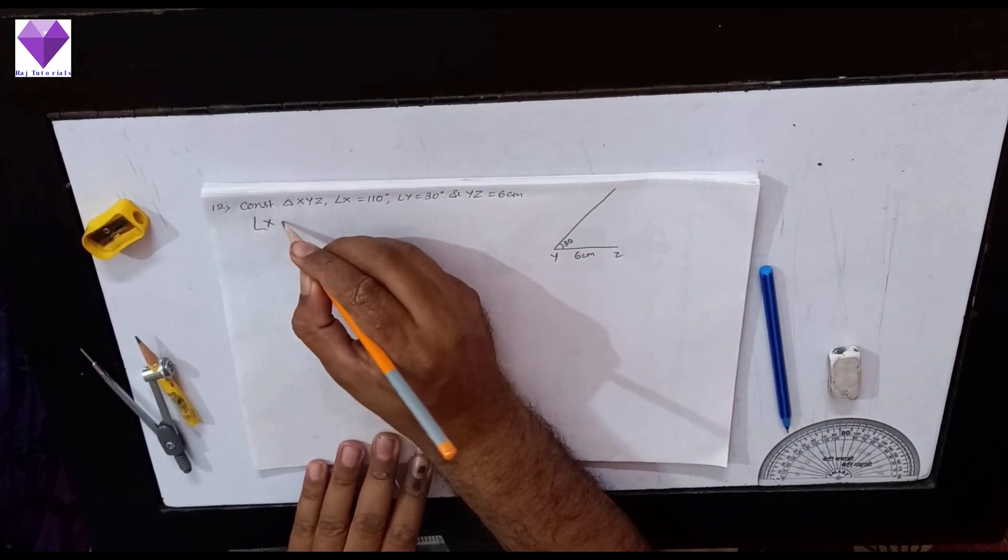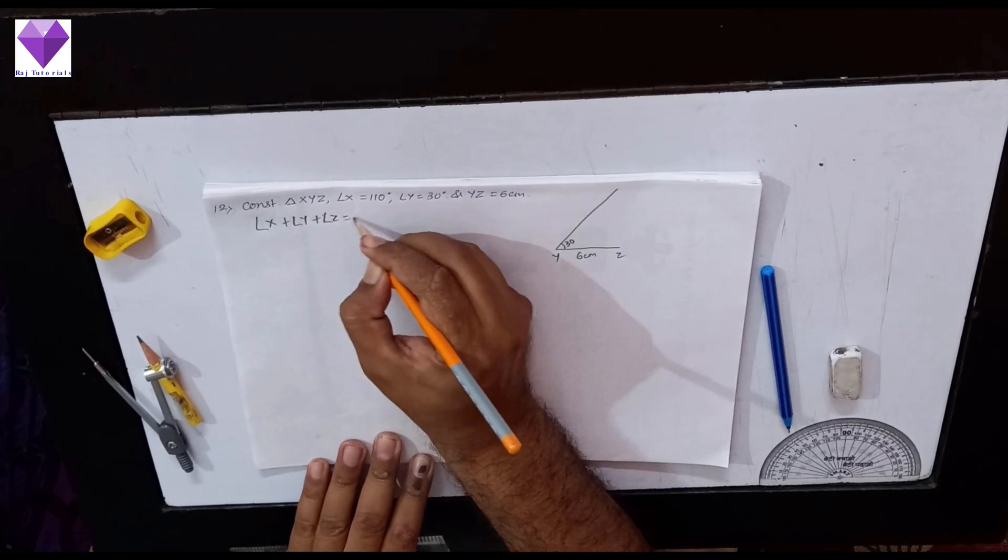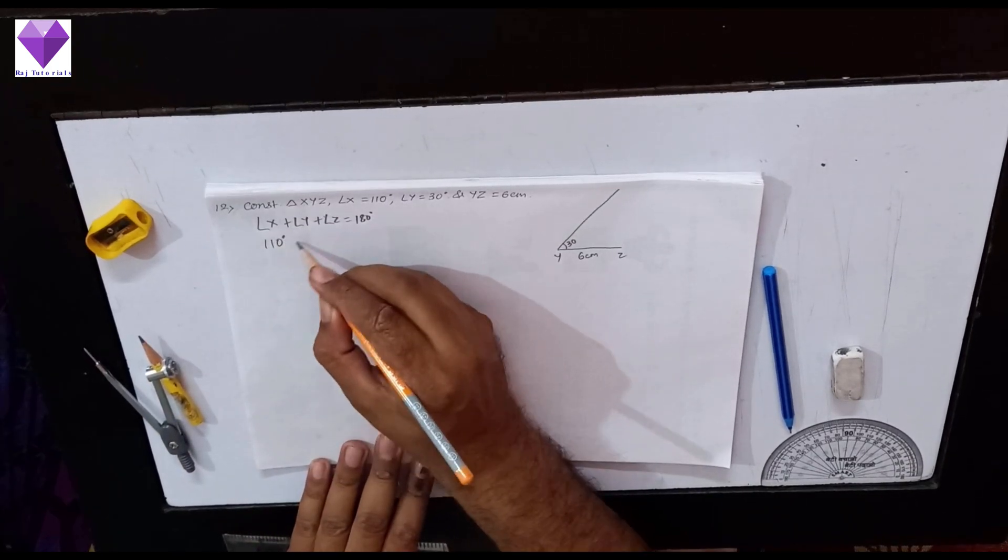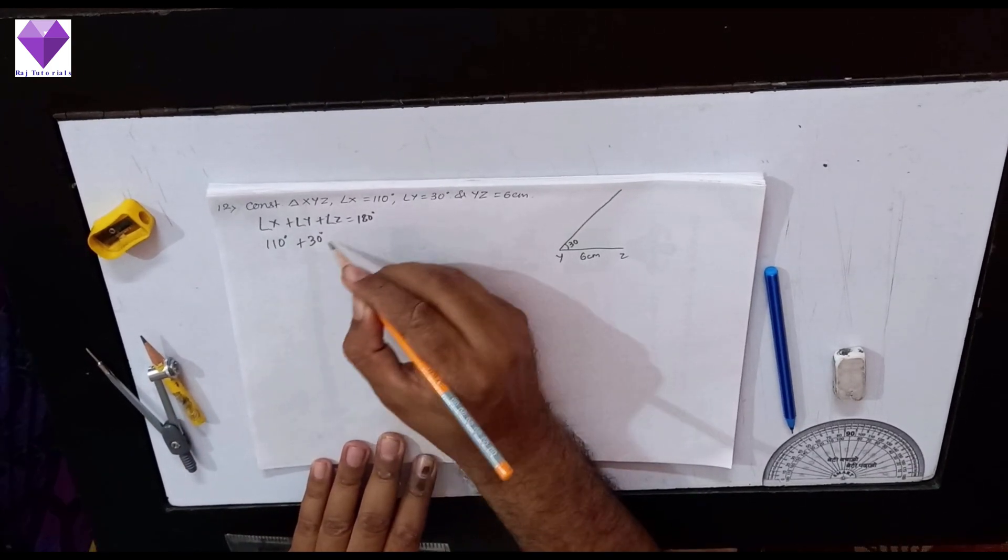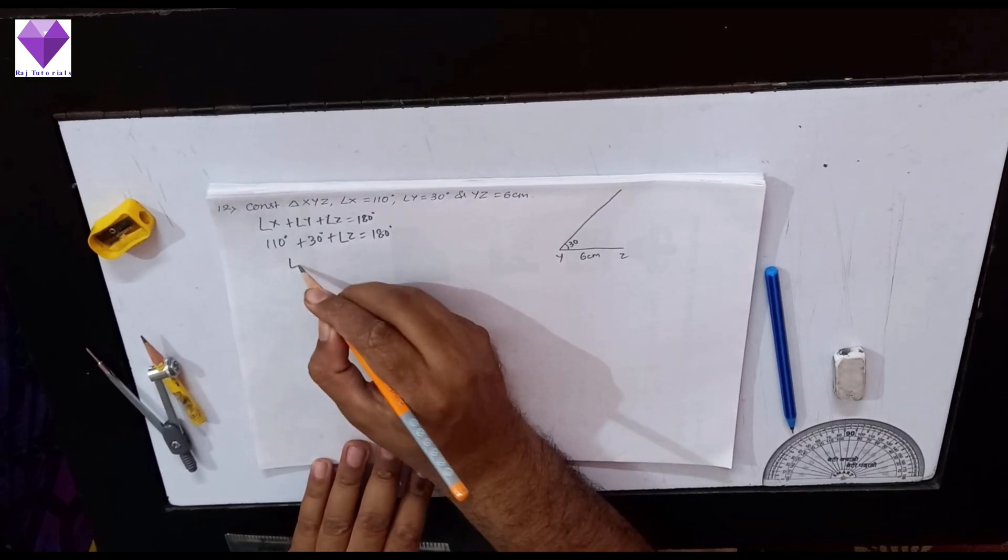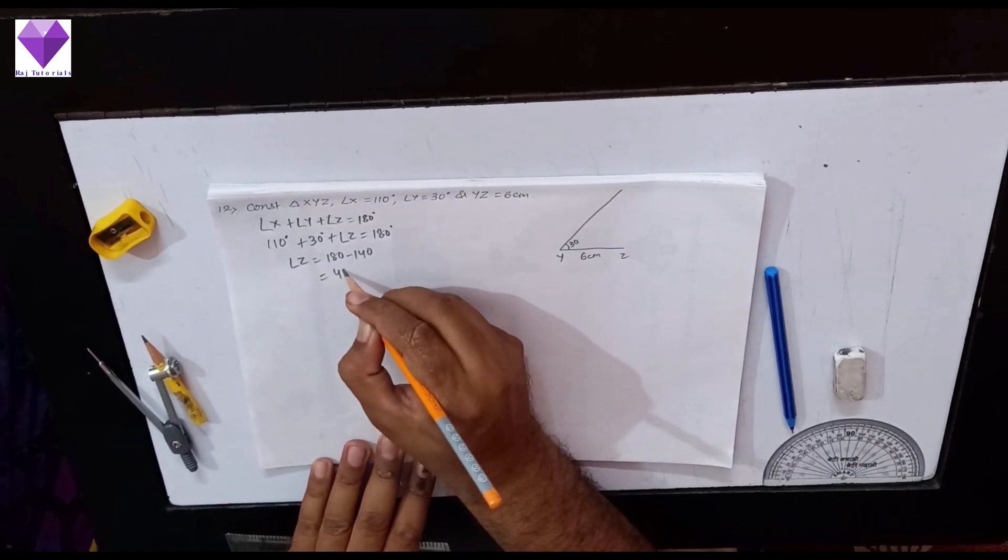Angle X plus angle Y plus angle Z equals 180 degrees. So angle X is 110, angle Y is 30, so angle Z will be equal to 180 minus 140, that will be 40 degrees.